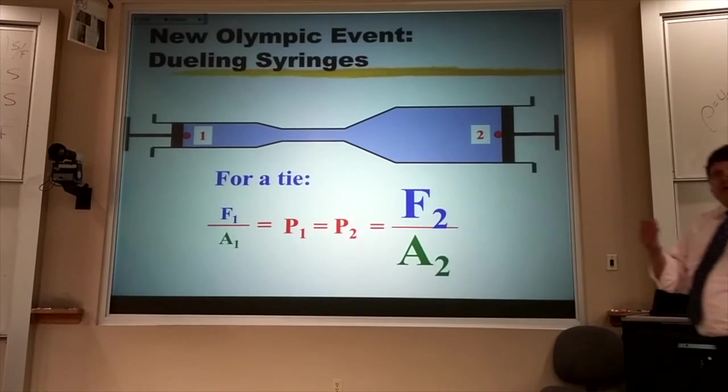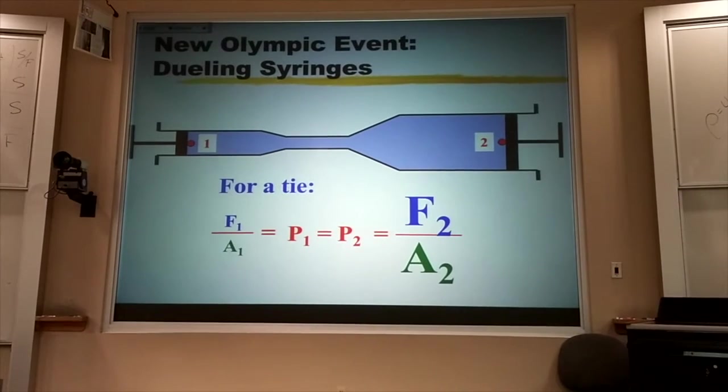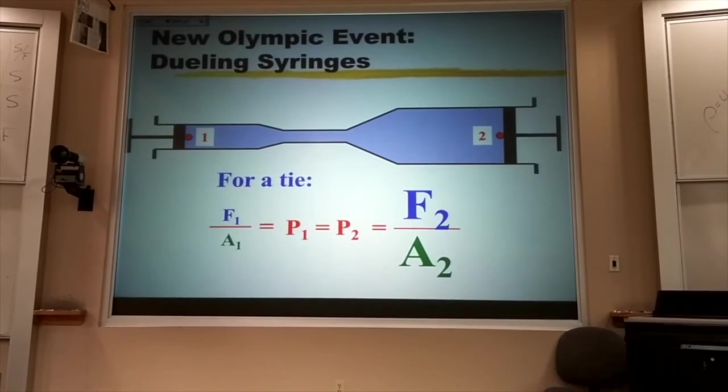If the ratio of the areas is four to one, that means Bennett would have to push with his thumb four times harder just to tie.